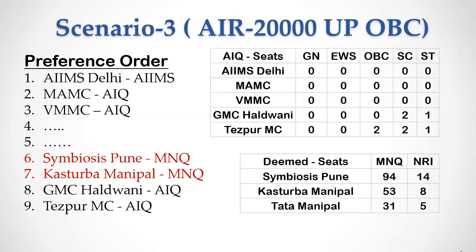Let's consider another scenario in which the candidate's All India rank is 20,000, which falls in the borderline of the All India quota closing rank. You can see the seat status for All India quota and deemed university on the right hand side and college preferences of the candidate on the left hand side. The candidate has given Symbiosis Medical College Pune management quota and Kasturba Medical College Manipal management quota before Government Medical College Haldwani and Tezpur Government Medical College. In this scenario, even though a government college seat is available in Tezpur Medical College under OBC category, the Symbiosis Pune management quota seat is allotted to the candidate. Many students avoid lower-ranking government colleges and prefer to study in top private colleges because of education quality.